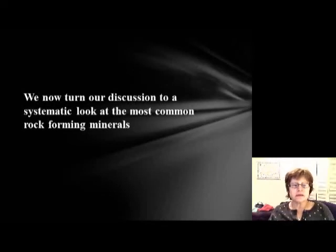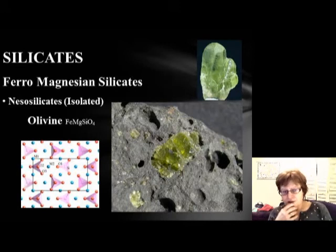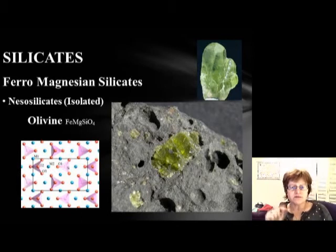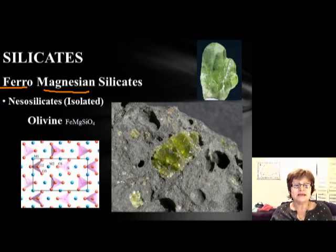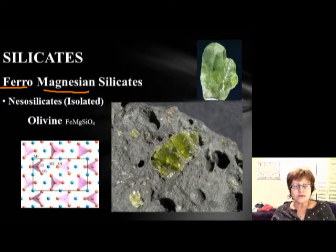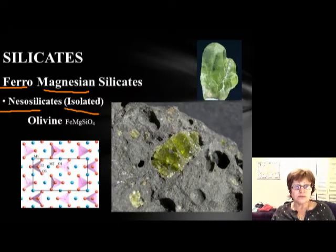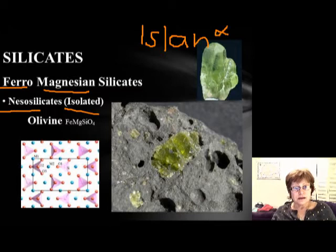We're going to start working on the individual minerals, beginning with the silicates. You will need to know the different silicates, which we categorize by their anion. Cations like iron and magnesium — we call these ferro-magnesium silicates. These are nesosilicates, also called isolated or island silicates — all synonyms for the same structure.